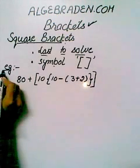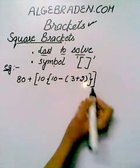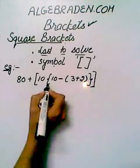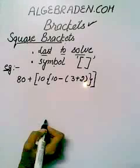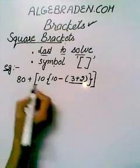Now we have an example. In this example, we have three sets of brackets: first square brackets, second curly brackets, and third parenthesis brackets. Now we solve.